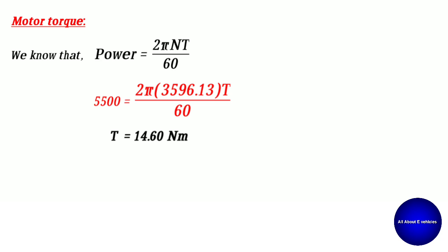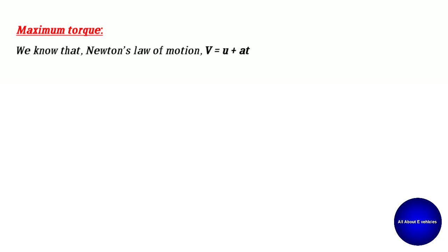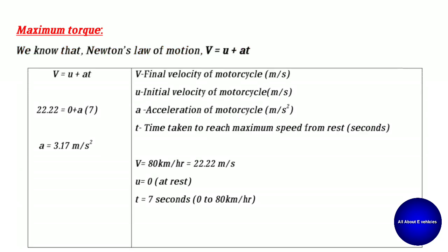Now we can find the maximum torque required to move the motorcycle. Using Newton's law of motion: v = u + at, where v is the final velocity of the motorcycle in meters per second, u is the initial velocity in meters per second, a is the acceleration in meters per second squared, and t is the time taken to reach maximum speed from rest in seconds. We take the final velocity as 80 kilometers per hour.